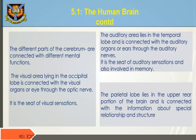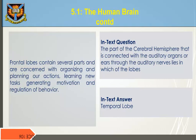The visual area lying on the occipital lobe is connected with the visual organs of the eye through the optic nerve; it is the seat of visual sensations, also involving memory. The parietal lobe lies in the upper rear portion of the brain and is connected with information, spatial relationships, and structure. Frontal lobes contain several parts and are concerned with organizing and planning our actions, learning new tasks, generating motivation, and regulation of behavior.